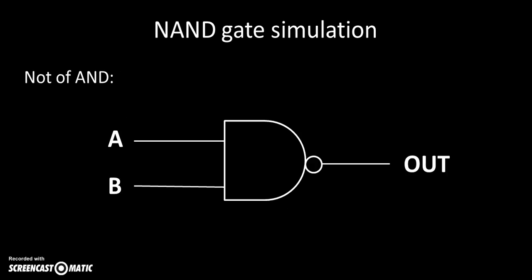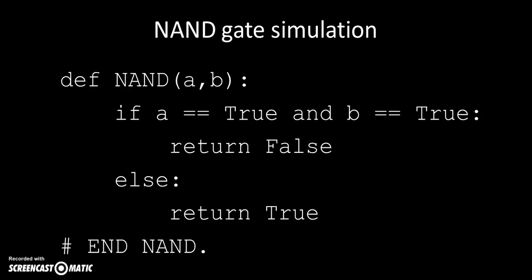If we do the NOT of the output, that means if A is true and B is true, for AND the output would be true, but it's the opposite for NAND — so it's false. It's false if they're both coming in true, and it's true for any other circumstances. We define NAND taking two parameters A and B, and if both A and B are true, we return false; otherwise we return true. That's the NAND function.